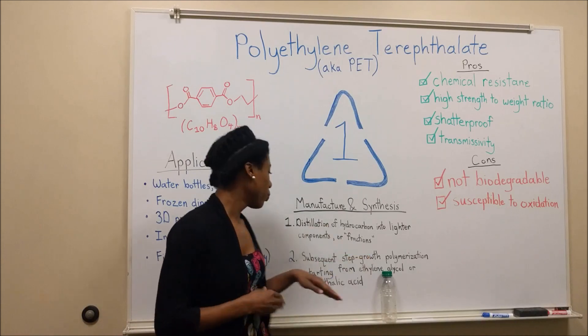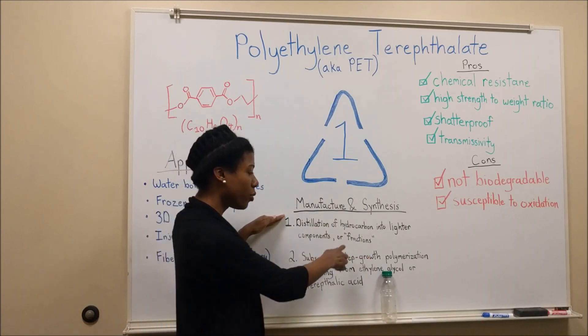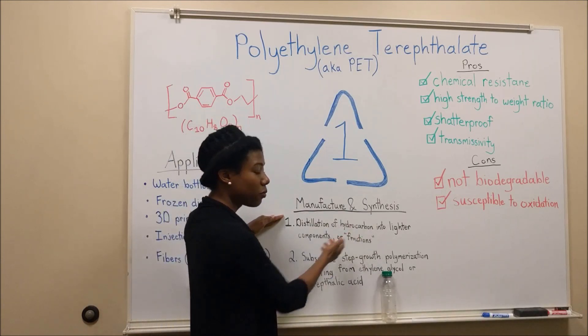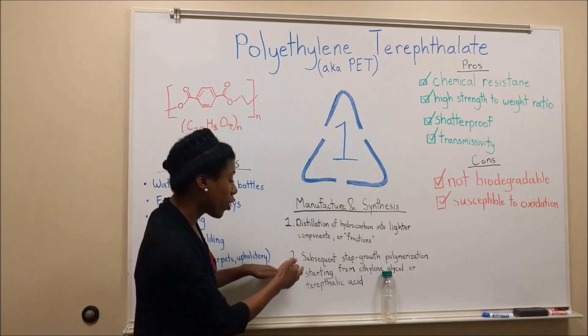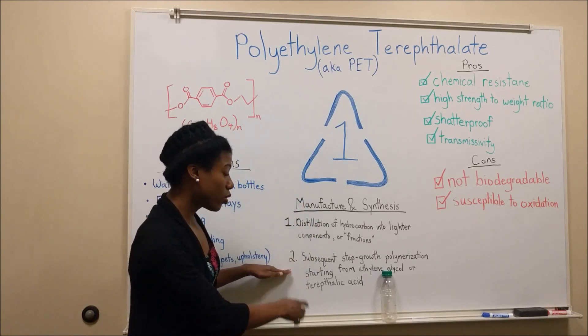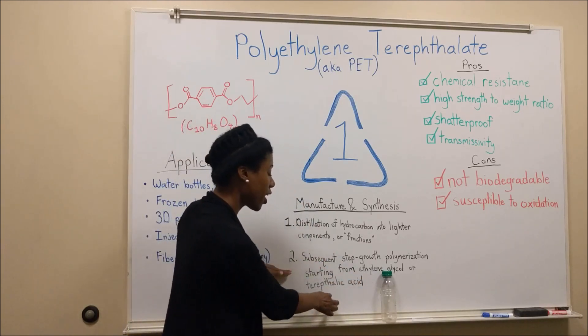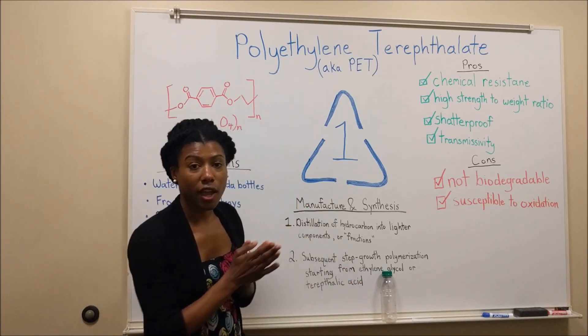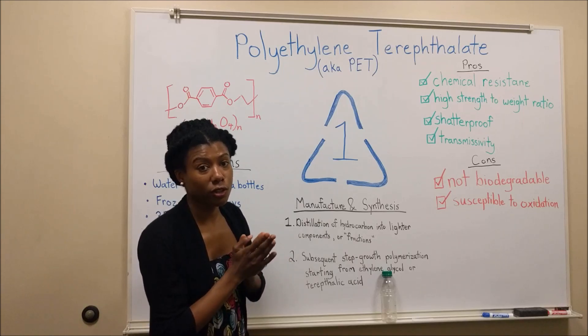So here we go. We distill the hydrocarbon into wider fractions. Within those fractions, we're able to extract ethylene glycol and terephthalic acid, and we do the step-growth polymerization that I mentioned earlier.